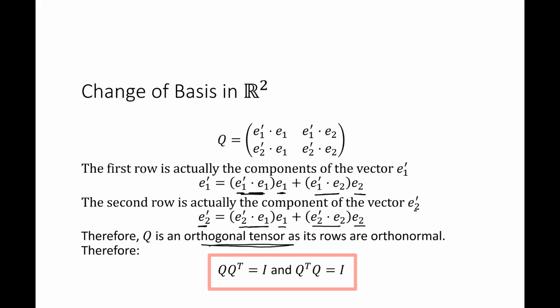Therefore, Q·Q transpose equals the identity matrix I, and equivalently Q transpose·Q equals I.